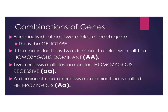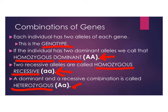Each individual has two alleles for each gene, and we call this the genotype. If an individual has two dominant alleles, we call that homozygous dominant, represented with two capital letters. If you have two recessive alleles, we call that homozygous recessive — homozygous means two of the same — represented with two lowercase letters. If you have one dominant and one recessive allele, we call that heterozygous, represented with a capital and a lowercase letter.